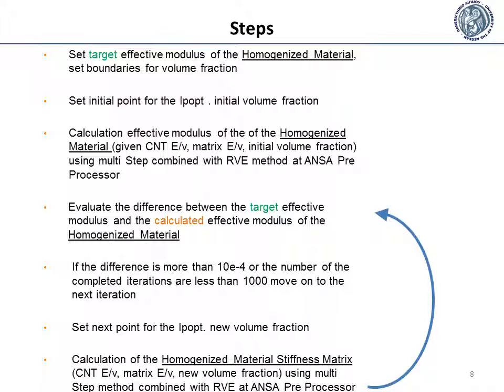The calculation is achieved using the multi-step method combined with the RVE method at the ANZA preprocessor. As the next step, the difference between the target effective modulus and the calculated effective modulus of the homogenized material is evaluated. If the difference is less than 1×10⁻⁴ or the number of completed iterations is less than 1000, move on to the next iteration. If not, convergence has been achieved.